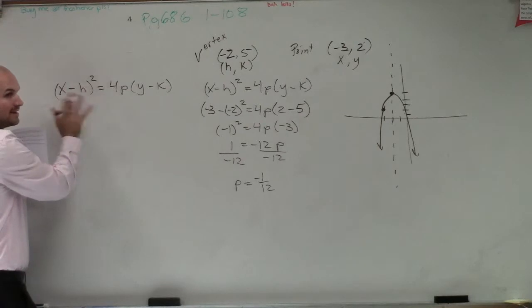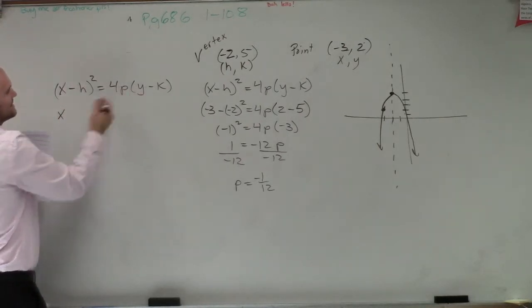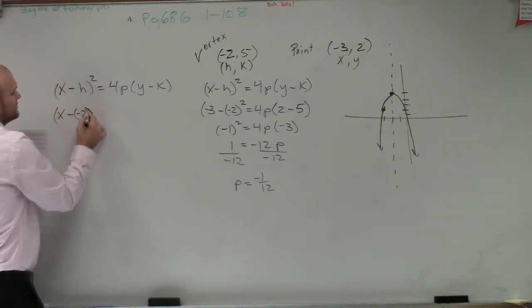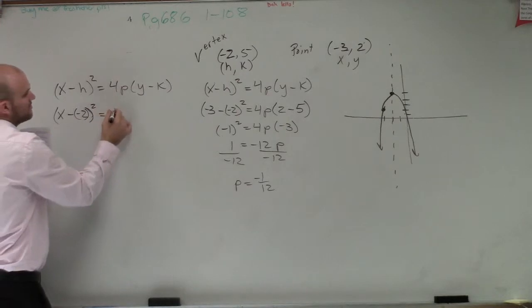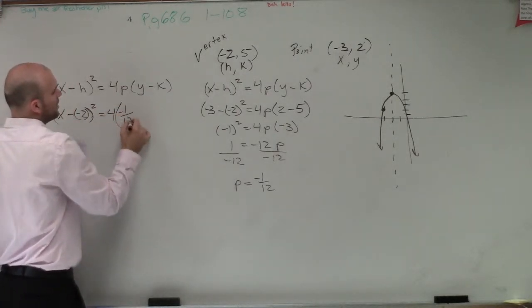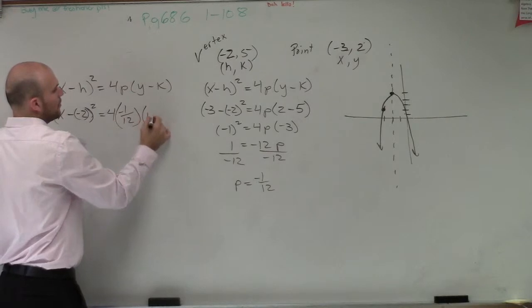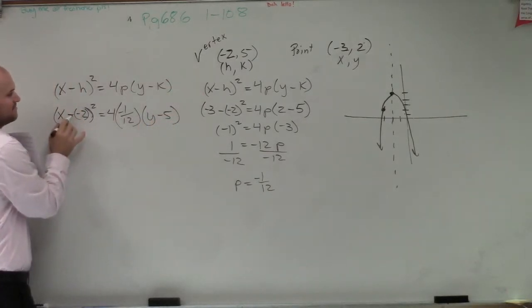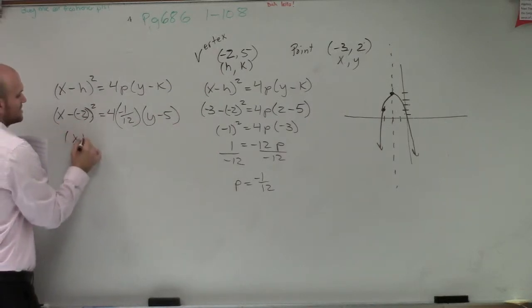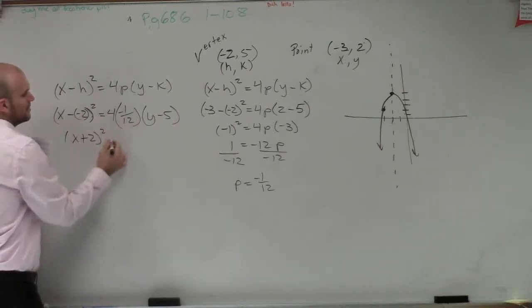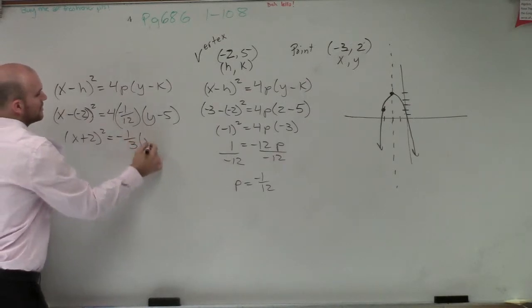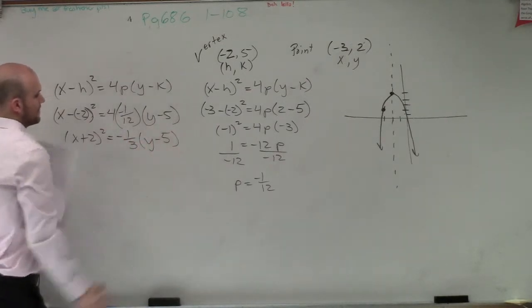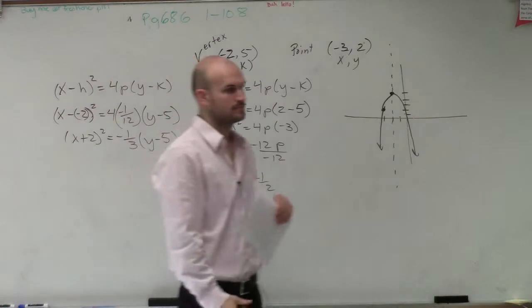So therefore, we write x minus h squared equals 4p times y minus k. Now, we don't want to solve for x and y. We want to leave that because that's going to be part of our equation. So we have x minus negative 2 squared, equals 4 times p, which is negative 1 over 12, times y minus 5. So now I can simplify this to x plus 2 squared equals negative 1 third times y minus 5. And there you go.